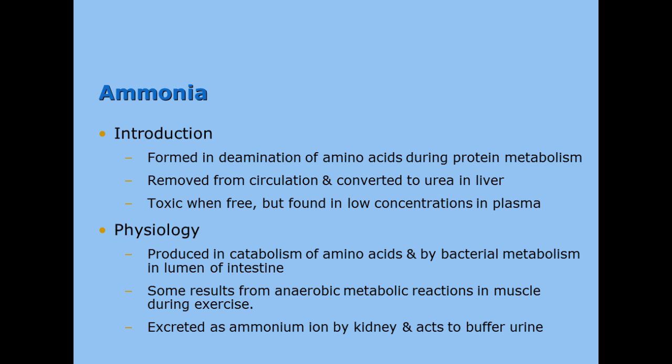The last NPN is ammonia. Ammonia is formed in the deamination of amino acids during protein metabolism and is removed from circulation and converted to urea in the liver. When you have an excess of amino acids, they are broken down into free ammonia. It can be safely converted to urea in the liver and sent through the kidneys. But if your liver fails, you cannot convert that ammonia to urea and it builds up in your bloodstream and becomes toxic. Some ammonia also results from anaerobic metabolic reactions in muscle during exercise and is excreted as ammonium ion in the kidneys, though it's more efficient to package it into urea.